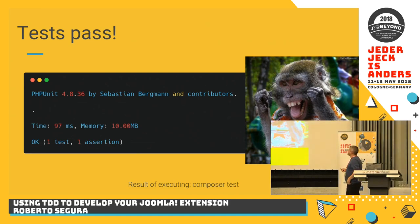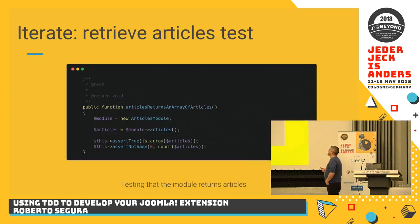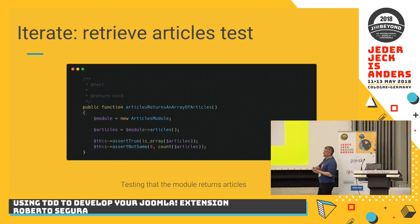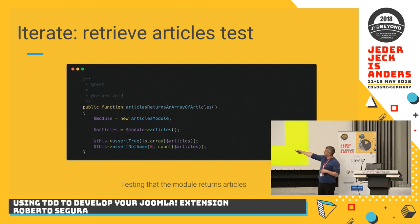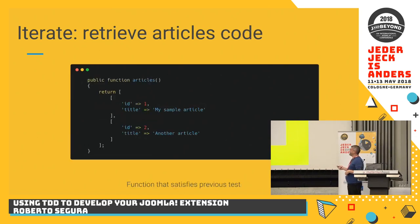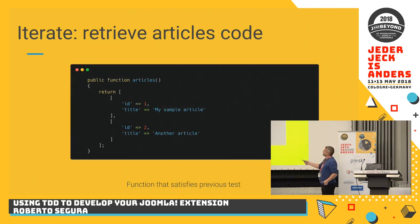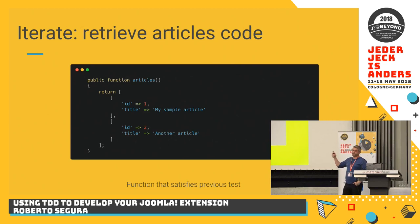Then we see the test executing and it works — we are very happy. Then we iterate to improve. Now the module already works for setting params. The next step is the main action: actually retrieving the articles. I'm retrieving the articles and ensuring I get an array that contains articles. The minimum code to satisfy the previous test would be to create a fake array with the articles we want.